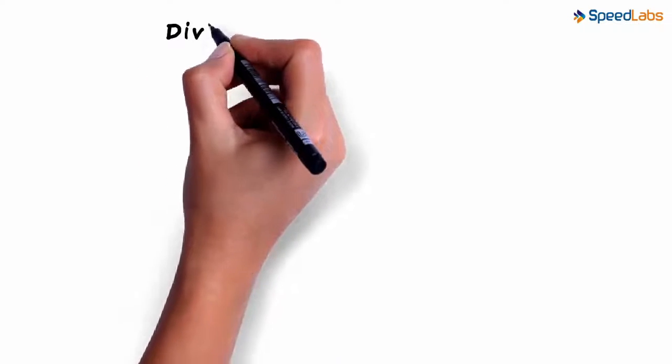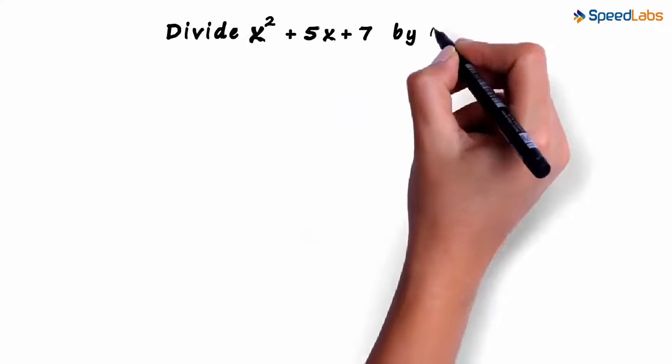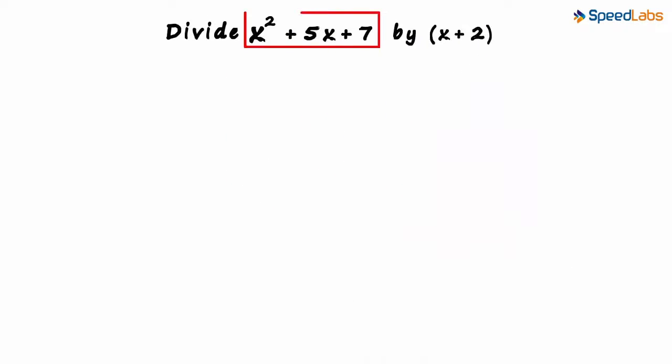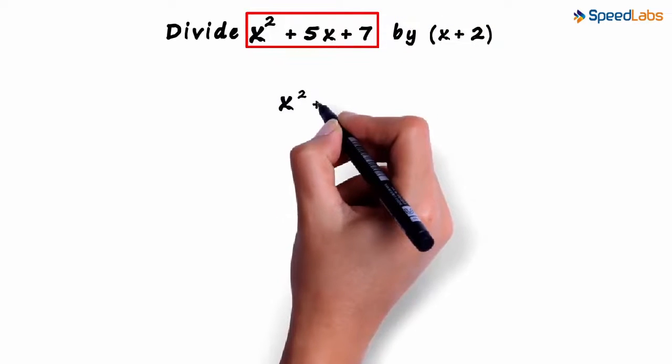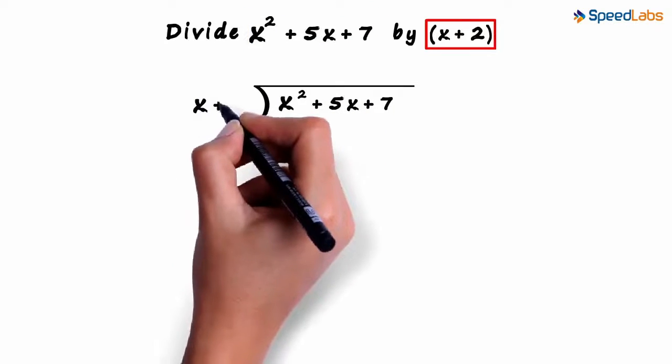Let's say we want to divide x squared plus 5x plus 7 by x plus 2. This is the dividend and this is the divisor. We write the dividend x squared plus 5x plus 7 here and divide it by the divisor x plus 2.